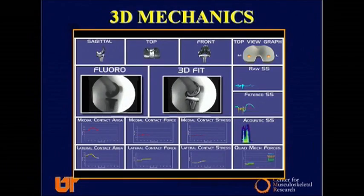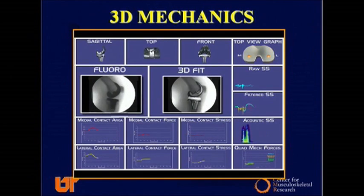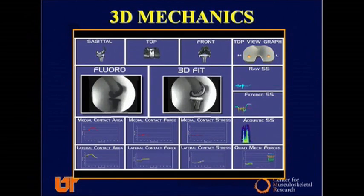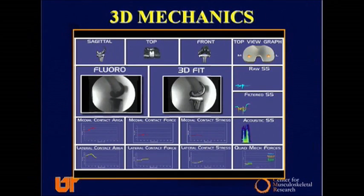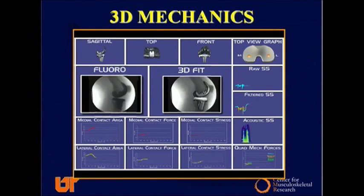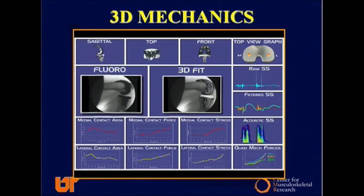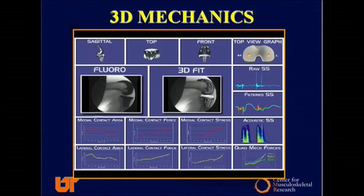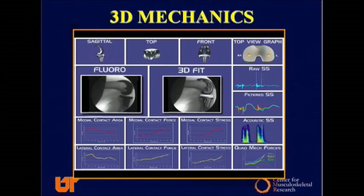Here's our fluoroscopic process. It allows us to fluoroscope the patient and use three-dimensional model fitting to extract the rollback, the axial rotation, the frontal plane condyle lift-off, but also to look at the forces, the contact areas, and the contact stresses — all under in vivo conditions.